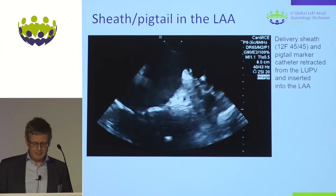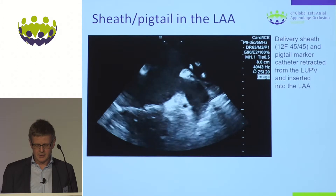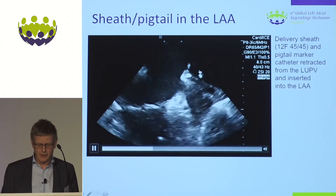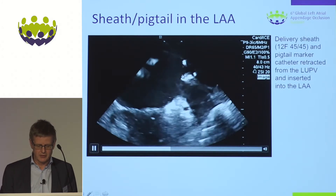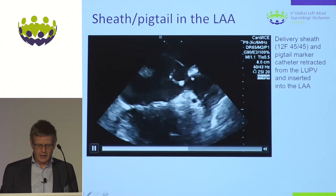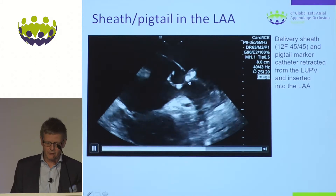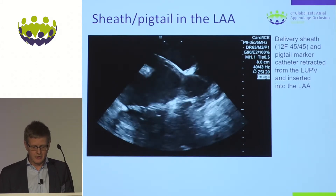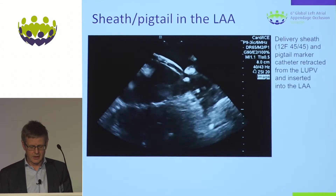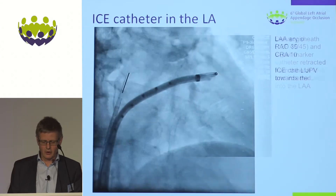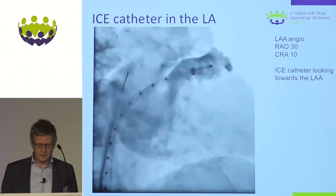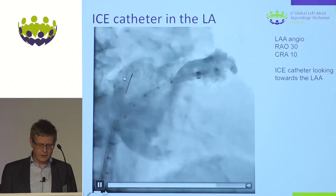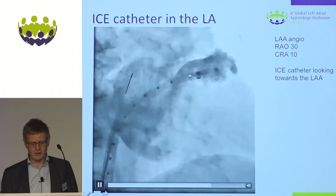I then place a pigtail marker catheter through the delivery sheath into the upper pulmonary vein and slowly retract it, easily following on ICE as it drops down to the upper pulmonary vein ridge and lands in front of the left atrial appendage. I prefer a pigtail because it is a soft structure, not a stiff sharp wire. I advance the pigtail into the left atrial appendage and the sheath follows. The ICE probe is positioned at the entrance of the left upper pulmonary vein, giving a clear view of the left atrial appendage and confirmed by angiography.